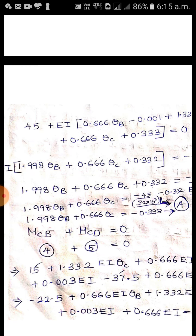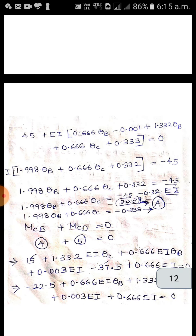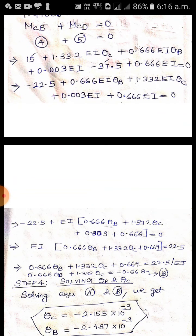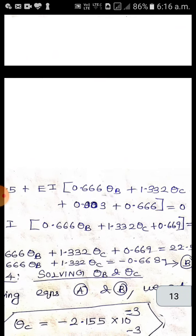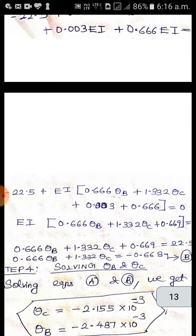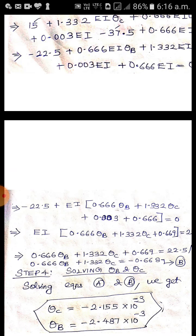Similarly M_CB plus M_CD equal to 0. Apply the same procedure. See again we are taking EI common. Minus 22.5 is taken to the other side. So the equation you get is second equation, B equation. 0.666 theta_B plus 1.332 theta_C equal to minus 0.668.